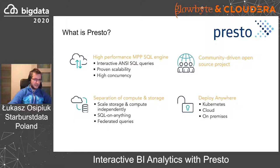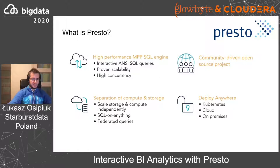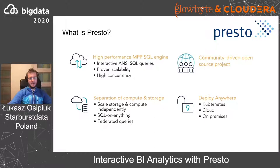Presto has a plugin architecture and is highly extensible. Out of the box, you can connect to a variety of different data sources. But you can also write your own connectors to sources not yet supported in the open source distribution or from commercial vendors. The side effect of this is that you can run federated queries, where a single SQL statement can reference tables coming from different places. This allows you to correlate data from different sources without having to bring all your data into one place — which can be a very lengthy and costly process, especially in complex enterprise environments.